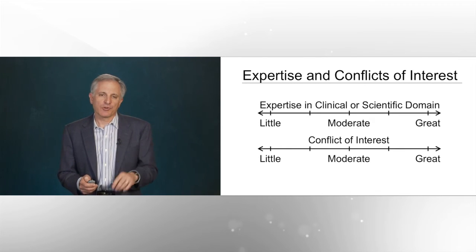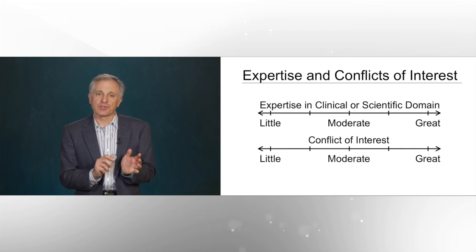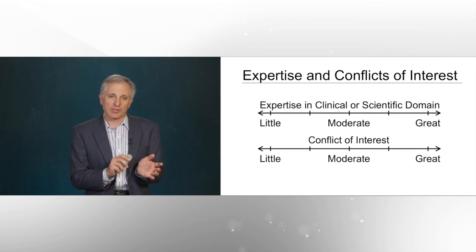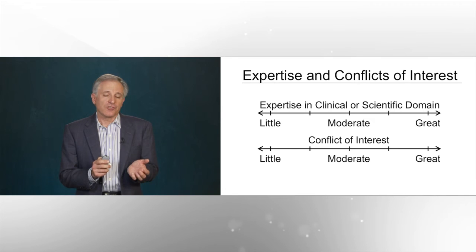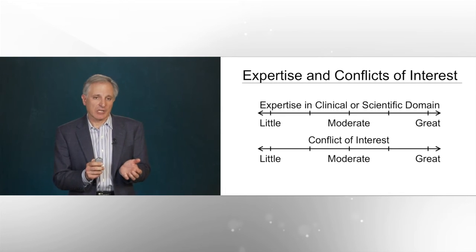I want to take a moment to talk about a challenge in identifying members for a DSMB that has to do with the correlation between expertise and apparent conflict of interest. The number of statisticians and clinicians with extensive experience in adaptive design is quite limited. And therefore, when trying to find people with high degrees of expertise in the clinical, scientific, or statistical domain, one generally identifies people who also have a greater degree of perceived conflict of interest. The DSMB should be constituted to balance that — to have some members with great expertise but some potential perception of conflict of interest, along with members who are relatively free of conflict of interest.